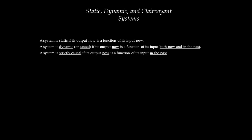As a special case of dynamic systems, a system is strictly causal if its output now is only a function of past input. Finally, a system is clairvoyant if its output now is a function of future input — in this case the principle that cause must precede effect vanishes and the system is not causal.